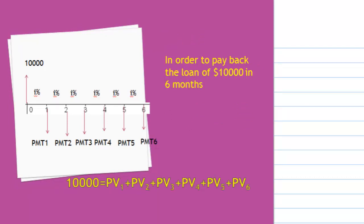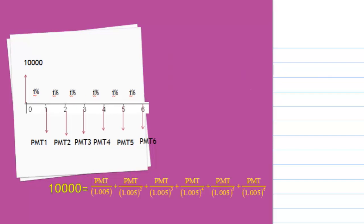In order to pay back the loan of $10,000 in six months, 10,000 must equal the sum of all these present values. That means 10,000 equals PMT/1.005 + PMT/1.005² all the way to PMT/1.005⁶.